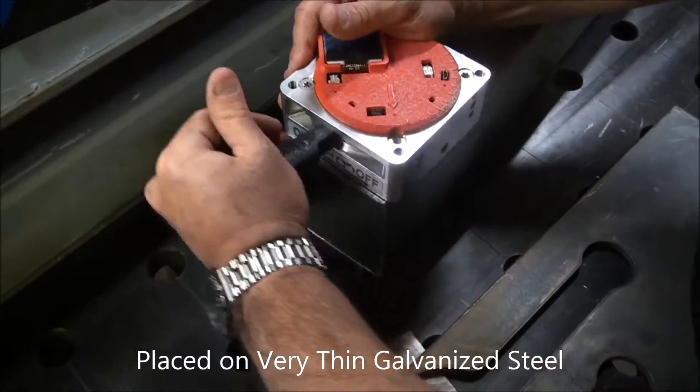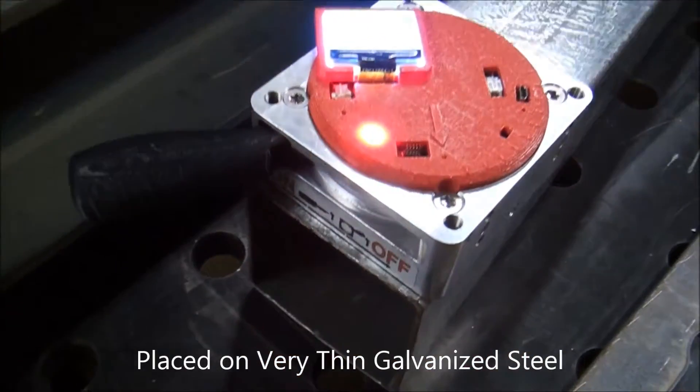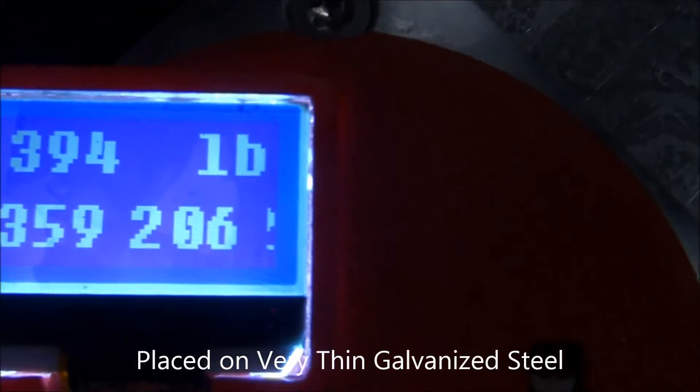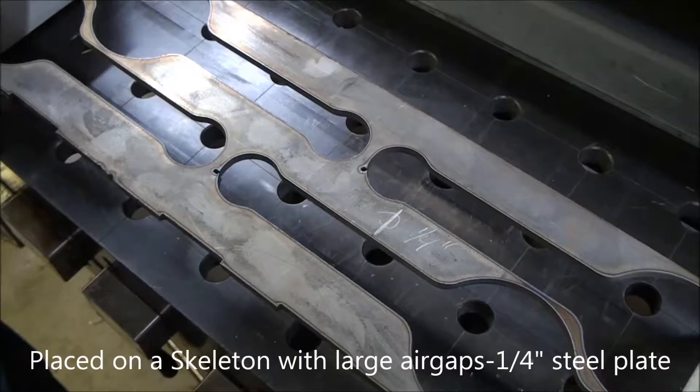On this very thin, galvanized metal, your first clue is how difficult it is to turn the magnet on. This indicates you don't have the holding power you otherwise would. Yet we still have over 390 pounds.